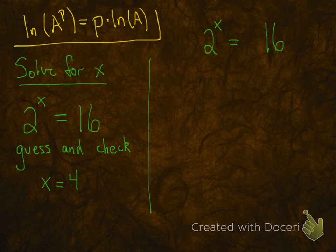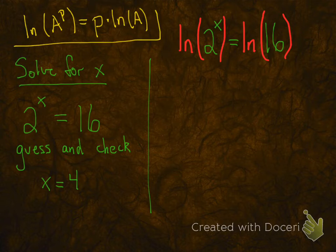Here's what you do. You take natural log of both sides. It's an equation, so whatever you do to one side, you have to do to the other side. So you slap a natural log around both of those.